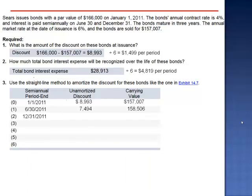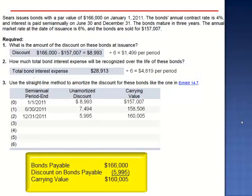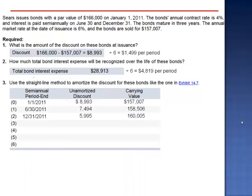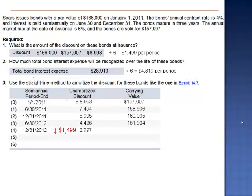December 31, 2011: we reduce the discount by an additional $1,499. The unamortized discount is $5,995. As the discount decreases, the carrying value increases. $166,000 minus $5,995 is a carrying value of $160,005. At the end of period 3, we amortize an additional $1,499, dropping the unamortized discount to $4,496, and the carrying value increases to $161,504. December 31, 2012, the unamortized discount is dropped by an additional $1,499 to $2,997, increasing the carrying value by $1,499 to $163,003.